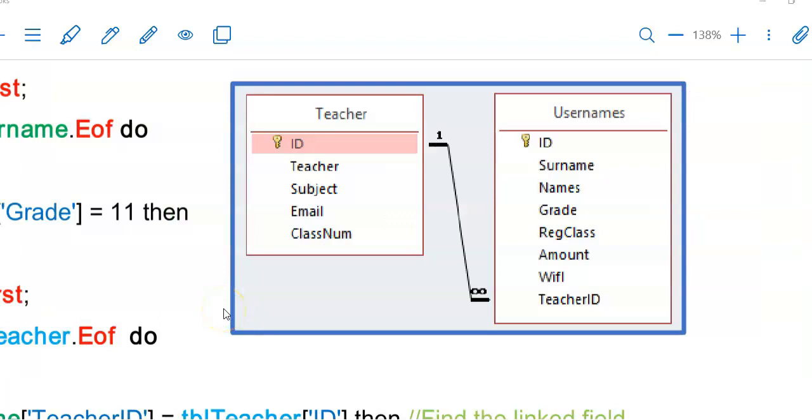Now before we continue with edit, there's one thing that you need to keep in mind. If you are going to make a change to your foreign key, it's important that you change it to a value that exists in the teacher table and also if you are going to change the primary key, it stays a unique value for each record.